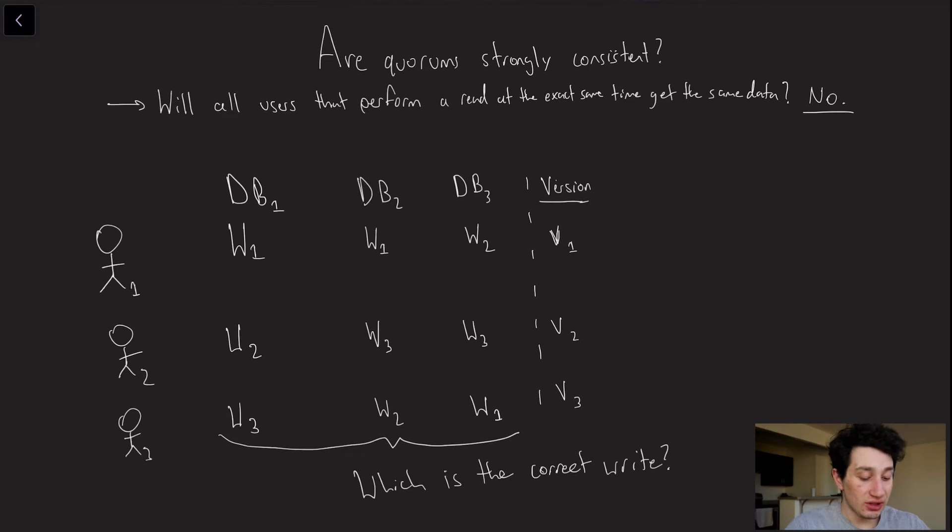I'm going to give a few examples of where quorum writes as potentially strongly consistent databases fall apart. The first one is actually going to be a race condition. Imagine we've got three databases, and at the same time, three people writing. The first guy is going to write to the first database, and actually all three people are going to write to all three databases. But due to the race condition that is present when you send about a bunch of writes, those writes are going to come in in a different order.